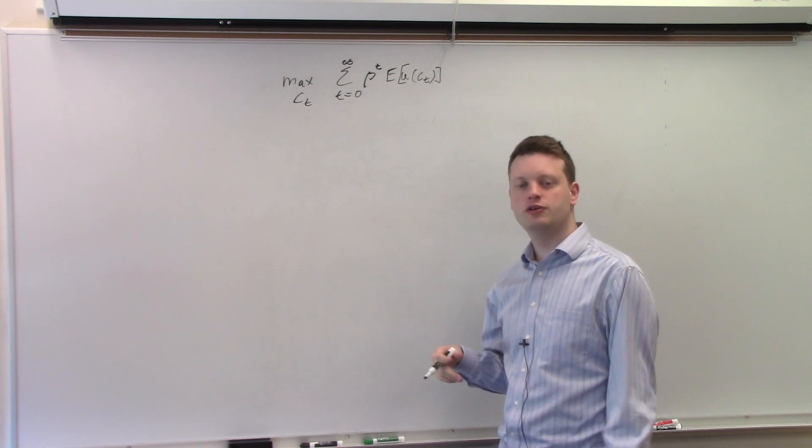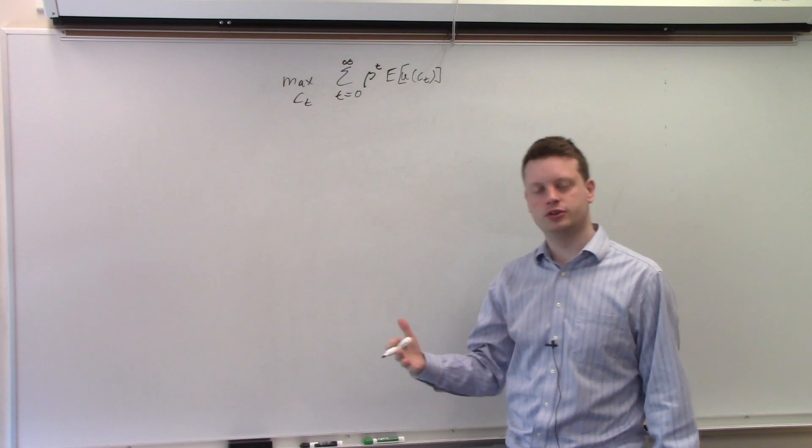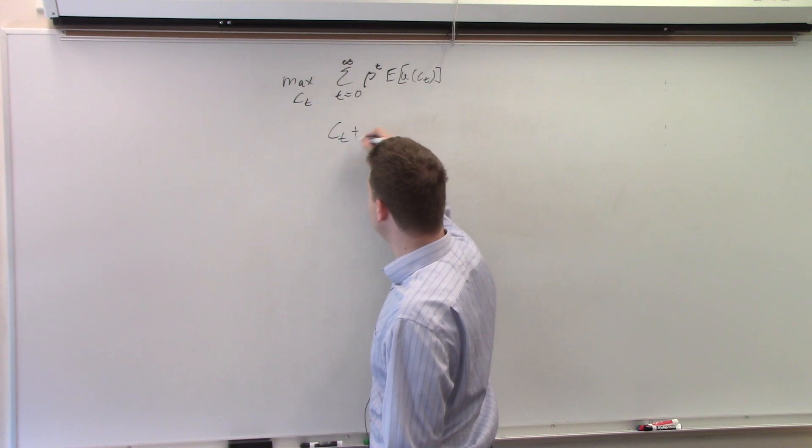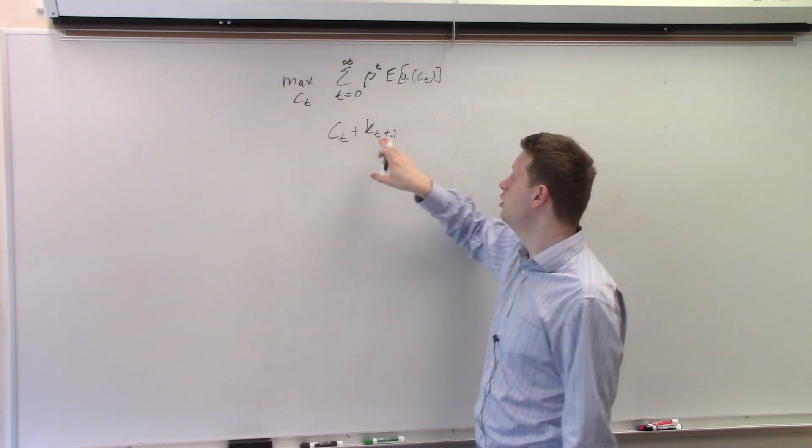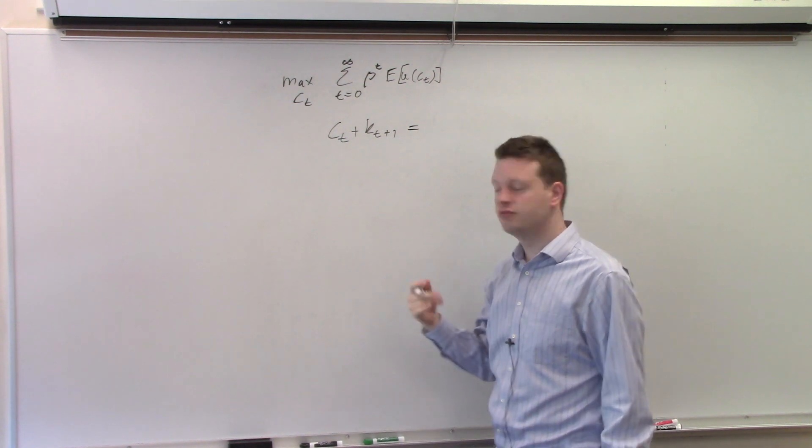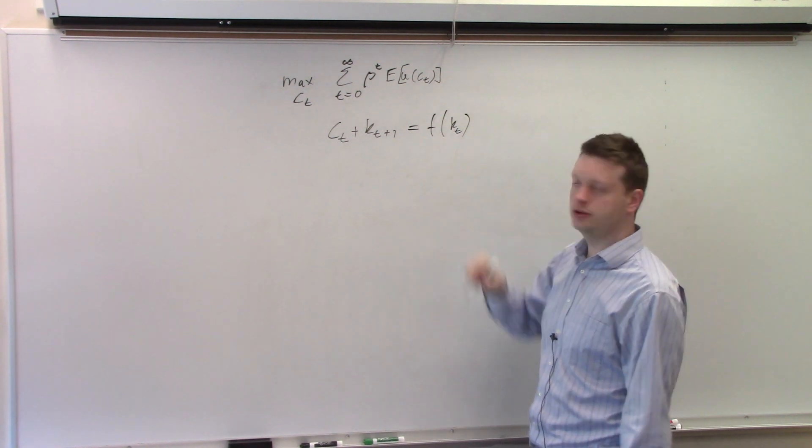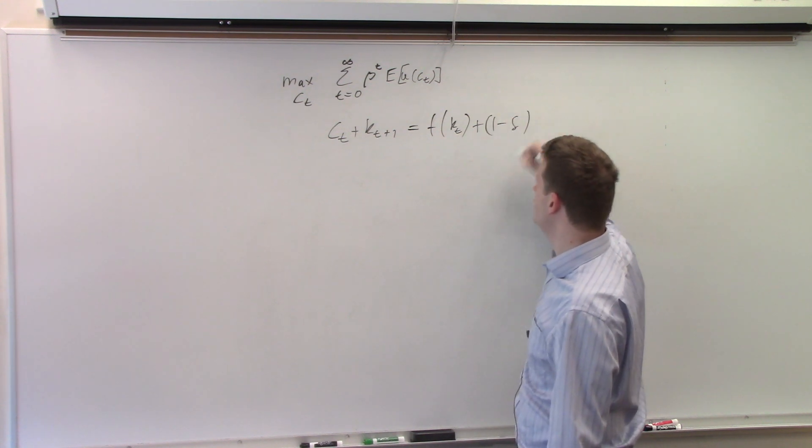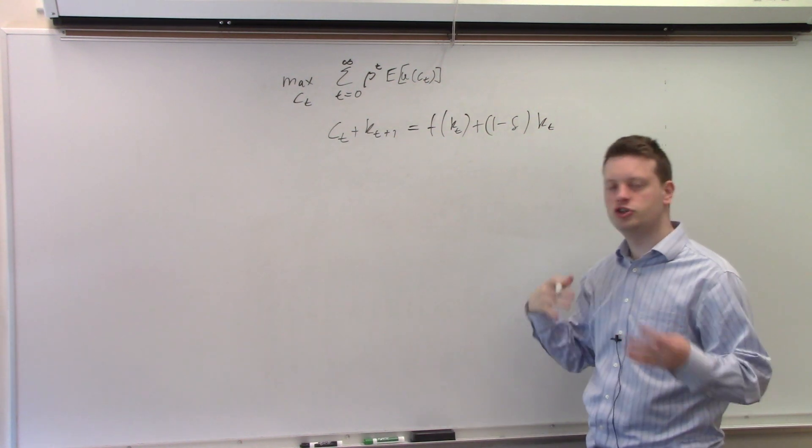Now we need to add a budget constraint. Let's add the following constraint where the consumer needs to choose between capital and consumption. So we have c_t plus k_{t+1}, so the consumer can choose between consuming today or having more capital tomorrow. And where does it get its income from? Well from some production which is a function of capital plus the previous level of capital depreciated. That is, we have the previous capital level minus some share of it depreciated.